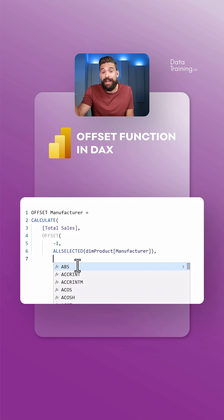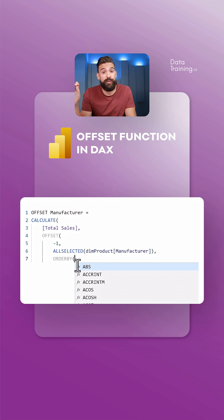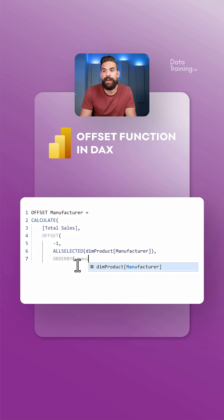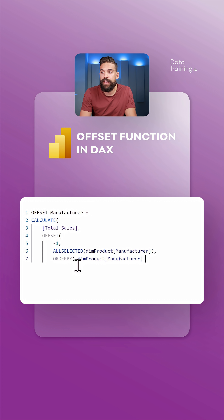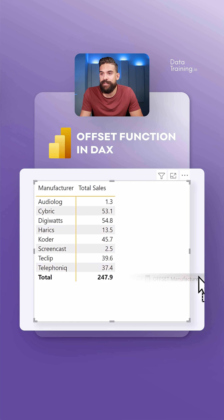The third argument is how we actually want to sort the manufacturers — ascending or descending order. We sort them by manufacturer, and we can put them in either ascending or descending order.